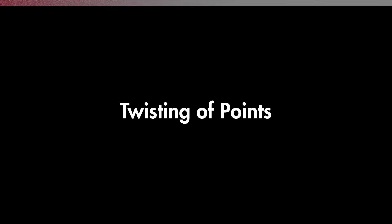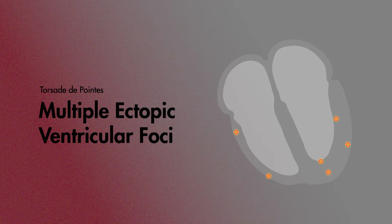It was first described in the mid-1960s and is thought to arise from multiple ectopic ventricular foci, which is why some classify torsades as a form of polymorphic ventricular tachycardia.